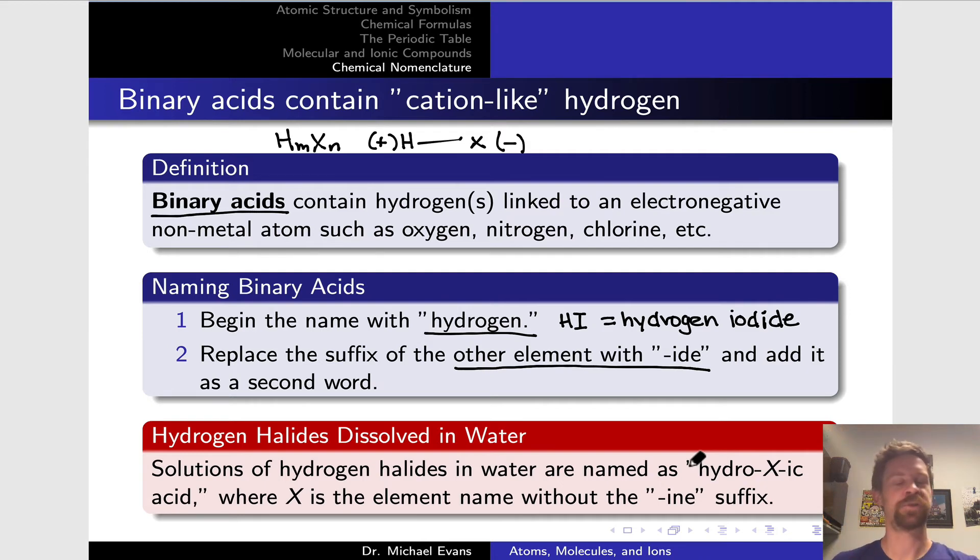Now, one exception to this that you will certainly see - not really an exception, just an alternative naming scheme - involves the hydrogen halides being dissolved in water. When we take HI, which is a gas by itself, and dissolve it in water, we generate something that is significantly different in character from the gaseous HI. It's a liquid solution. And so we change the name. We use the name 'hydro-x-ic acid,' where the x is the root name of the halogen without the 'ine' suffix. So for HI in water, HI gas dissolved in water, we would call it hydroiodic acid. You'll see that naming scheme used for binary acids of the halogens as well - hydrochloric acid, hydrofluoric acid, etc.